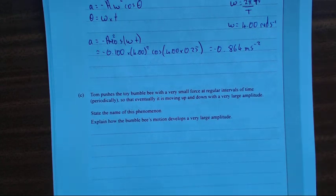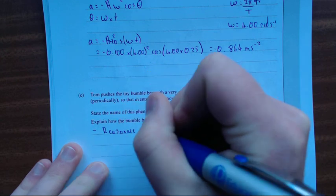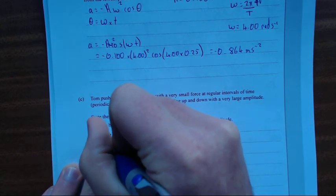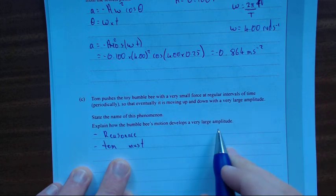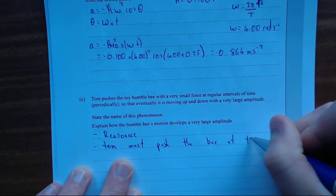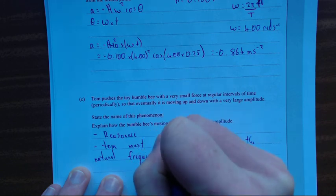Tom pushes the toy bumblebee with a very small force at regular intervals of time, so that eventually it's moving up and down with very large amplitude. State the name of this phenomenon and explain how the bee's motion develops a very large amplitude. So it's called resonance.